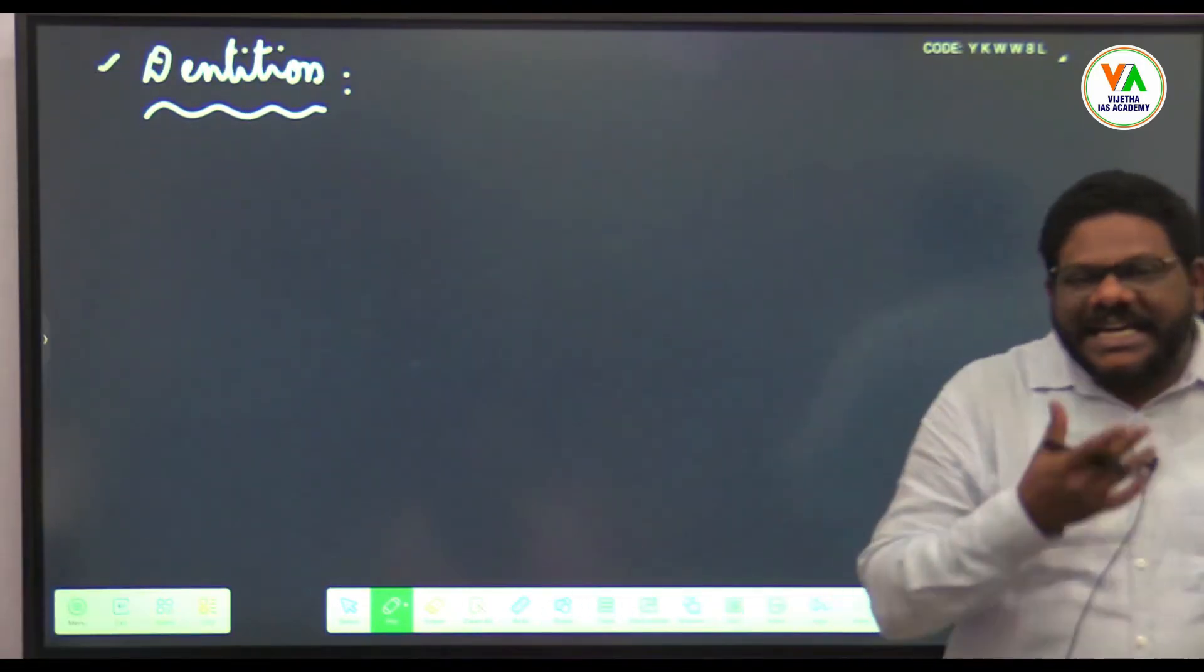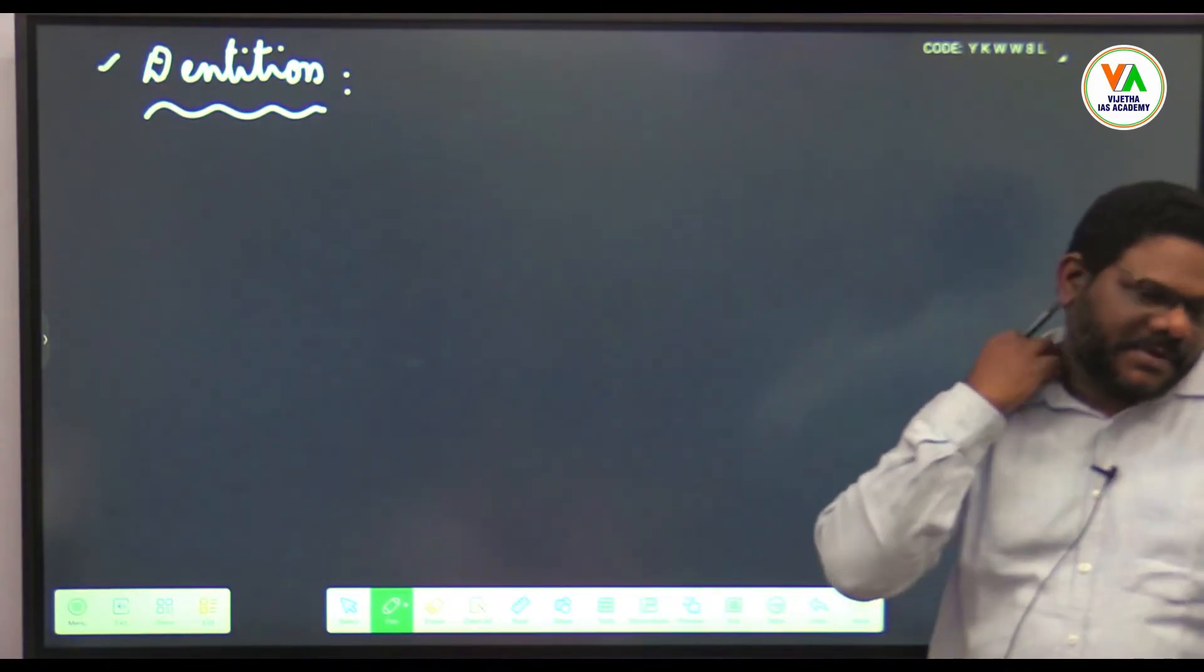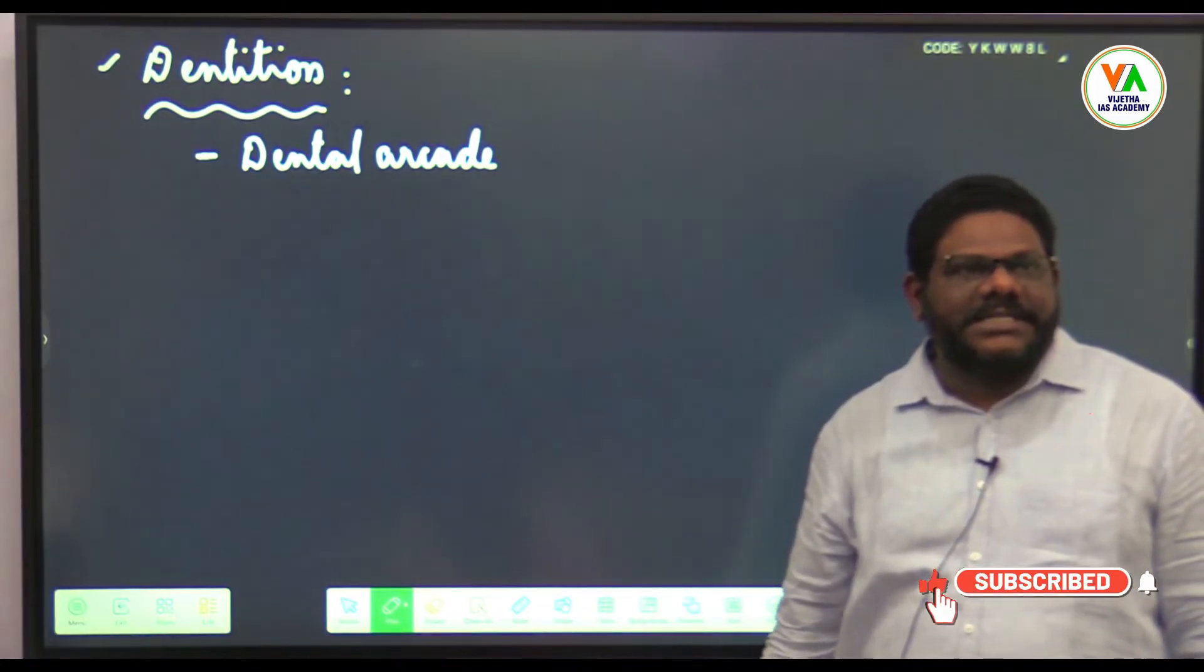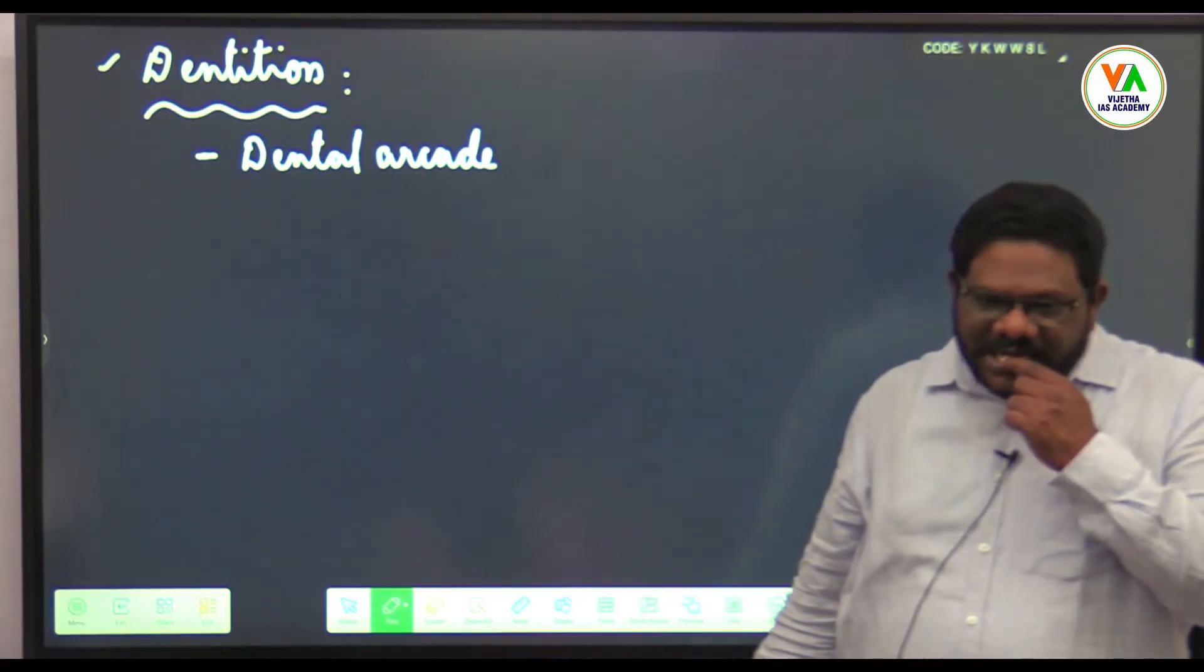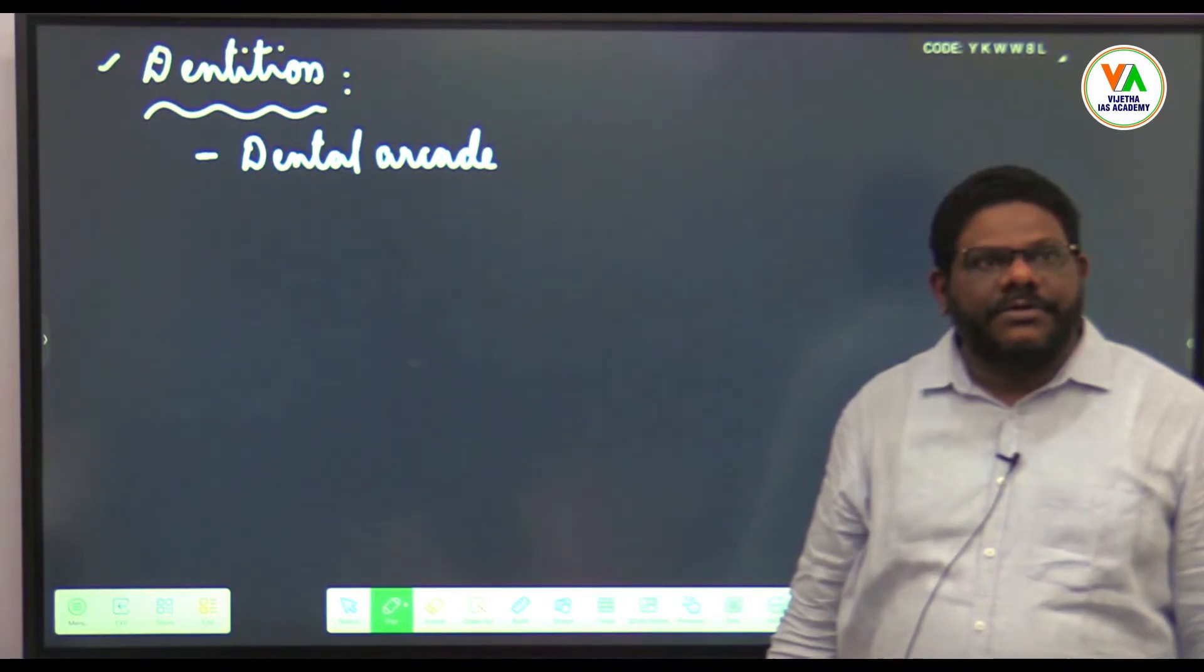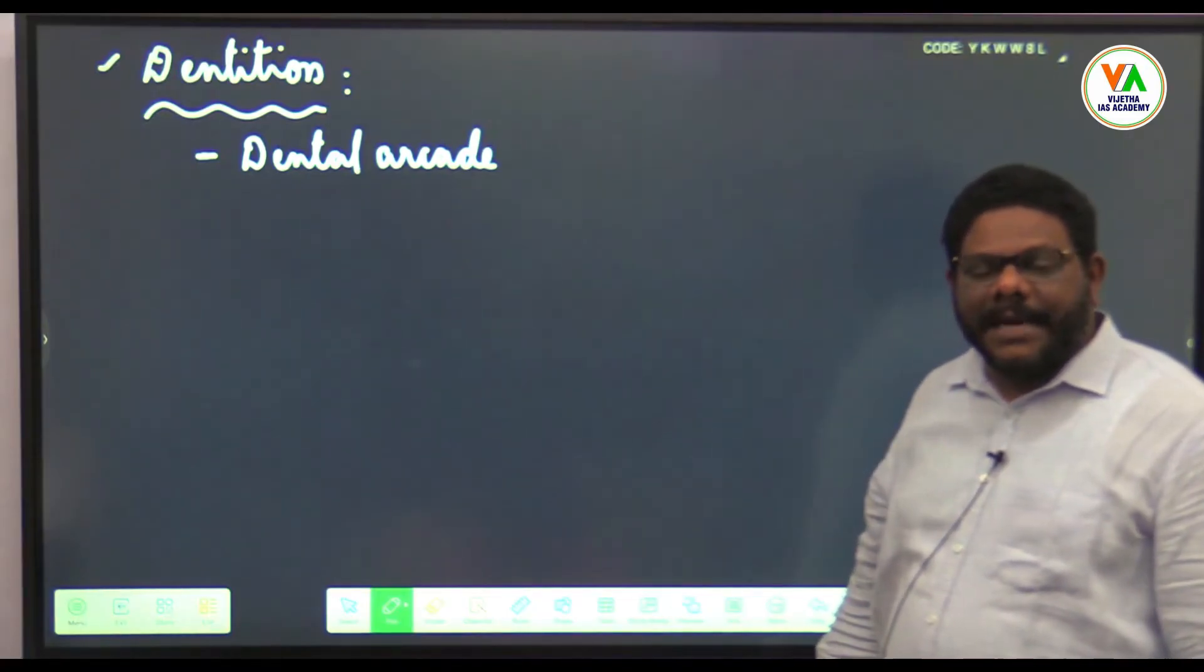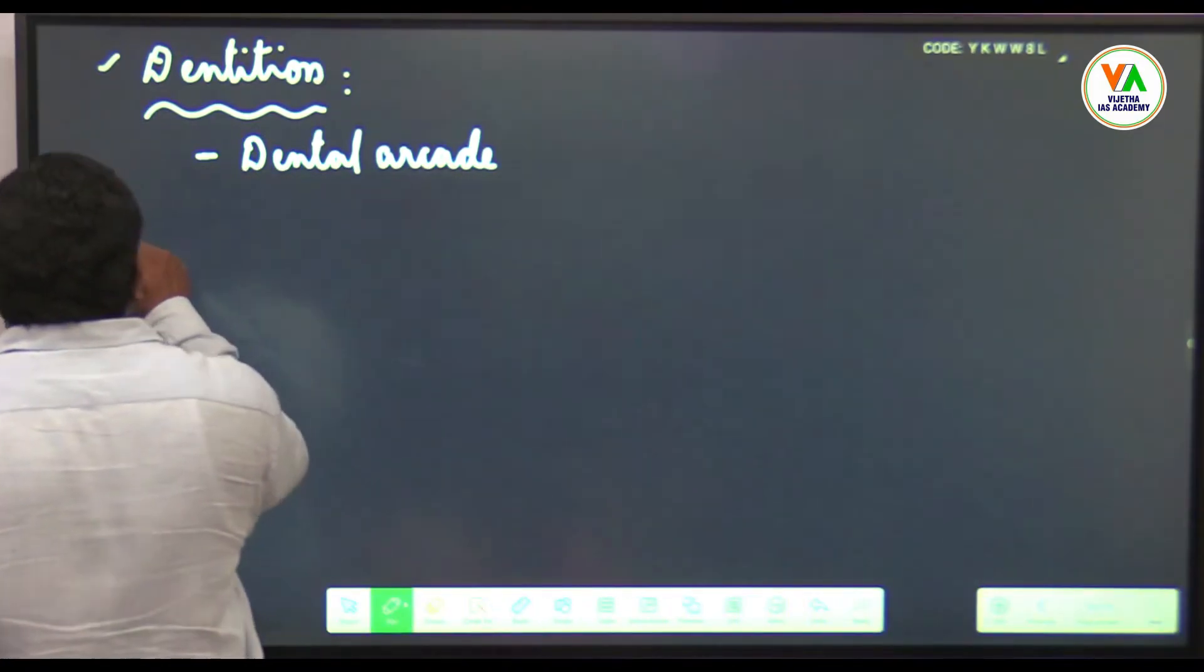Next: dentition. Dental arcade is parabolic, human-like, not rectangular like apes. Incisors are small. Canines are slightly projecting—above the level of other teeth. Premolars and molars are large and useful for grinding raw food. Mandible is massive. Y-5 pattern is present.